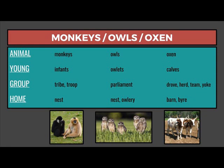The young of owls are owlets. A group of owls is a parliament. The home of owls is a nest or an owlery. The young of oxen are calves. A group of oxen is a drove, herd, team, or yoke, and the home of oxen is a barn or a byre.